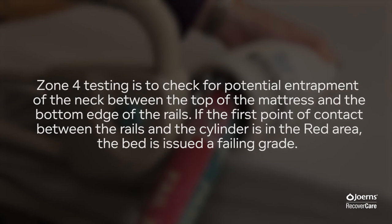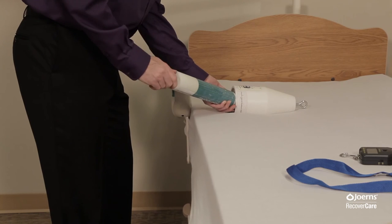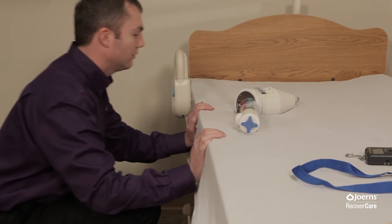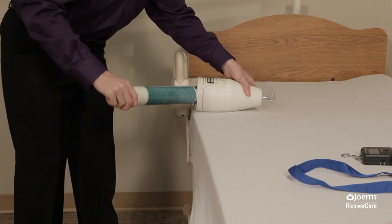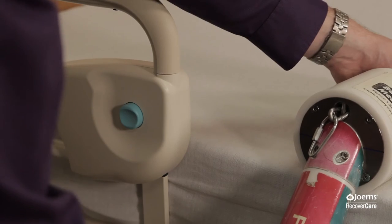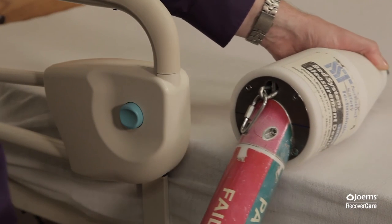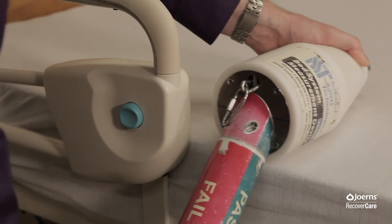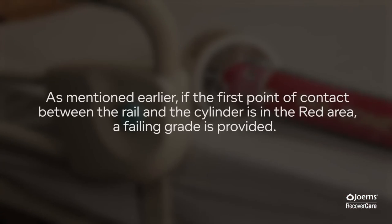Zone 4 testing is to check for potential entrapment of the neck between the top of the mattress and the bottom edge of the rails. If the first point of contact between the rails and the cylinder is in the red area, the bed is issued a failing grade. Zone 4 testing uses the cone and cylinder. Push the mattress away from the rail when testing. The cone of the tool is positioned on the edge of the mattress. On the cylinder you will see a leveling tool — be sure to keep the tool leveled. On the cylinder you will find green zones and red zones; if the first point of contact between the rail and the cylinder is in the red area, a failing grade is provided.